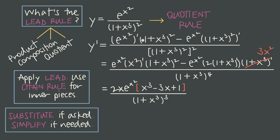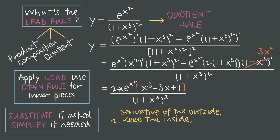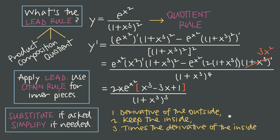For any chain rule problem, no matter how complicated, remember: identify your primary rule, then apply that lead rule using chain rule as you go for the inner pieces where needed. Any time you encounter the outside-inside pattern, chain rule tells you: derivative of the outside, keep the inside, times the derivative of the inside. If you want more help with chain rule and lots more practice — including multiple choice questions, free response questions, and worksheets — check out the Calculus 1 course linked below.